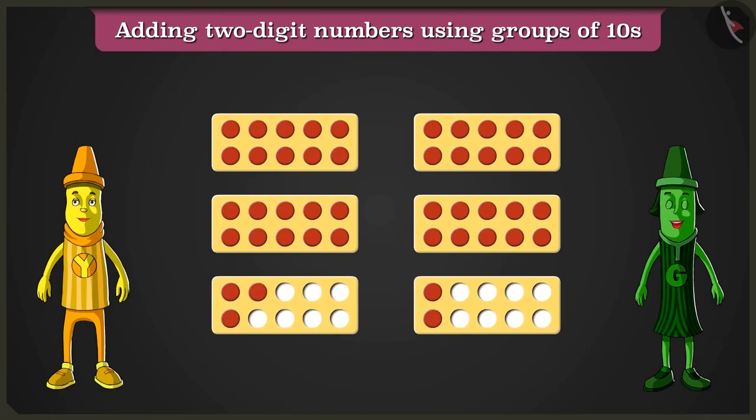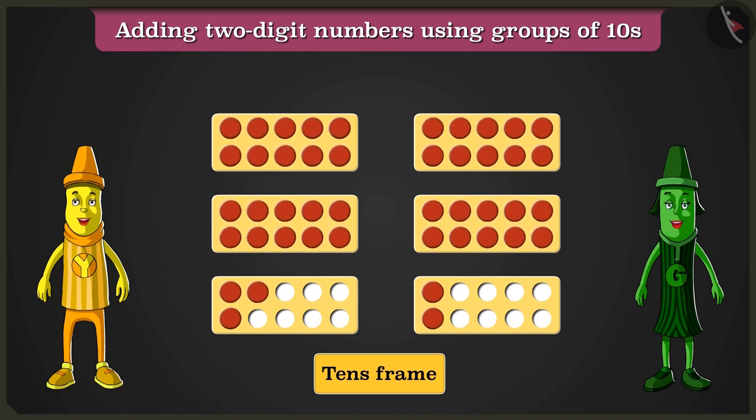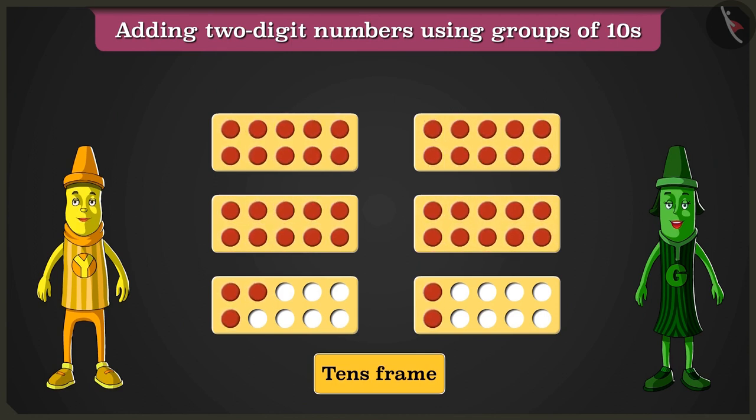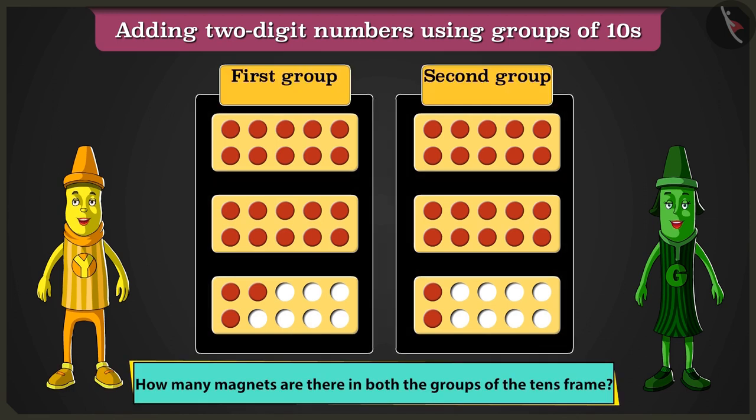Greeny, look, this is a 10s frame. There are red magnets on the frame. Now can you tell me how many total magnets are there in both the groups of 10s frame?